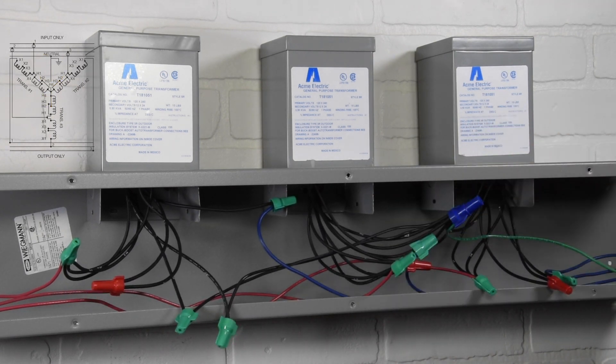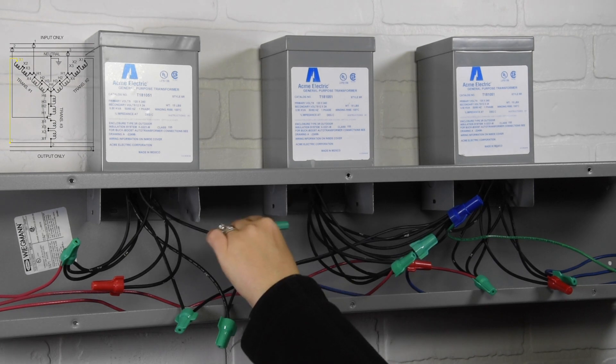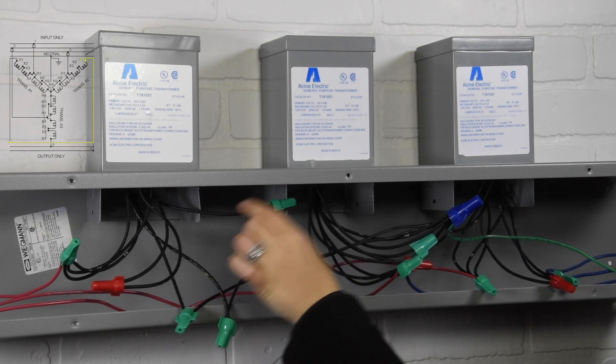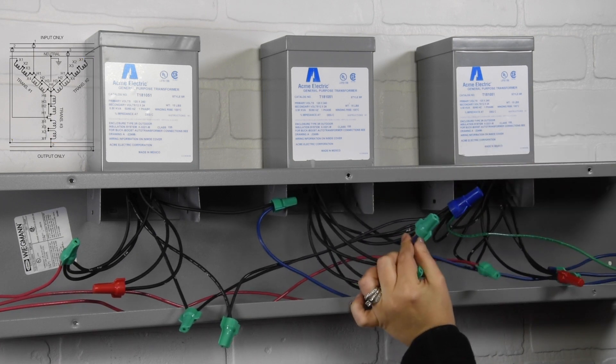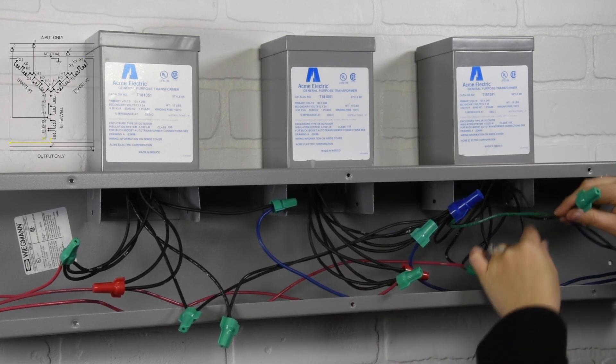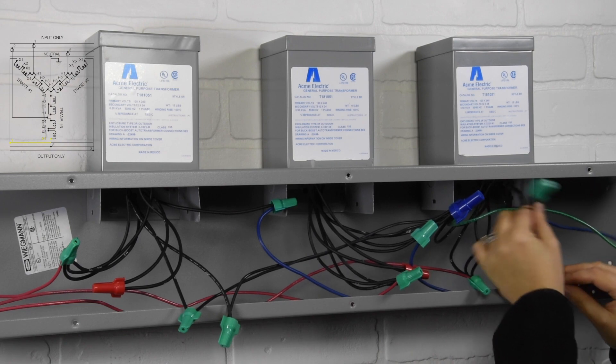Eighth connection: output 1 to transformer 1 wire X1. Ninth connection: output 1 to transformer 2 wire X1. And final connection: output 1 to transformer 3 wire X1.